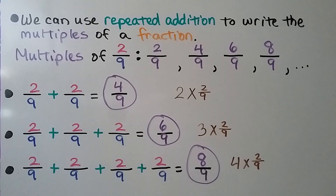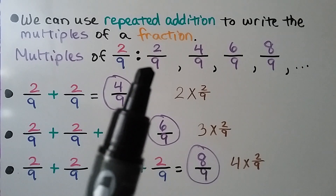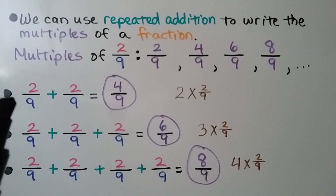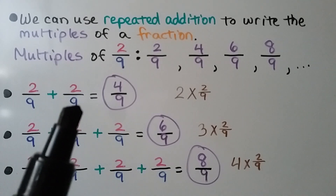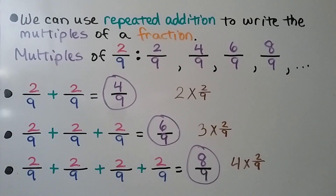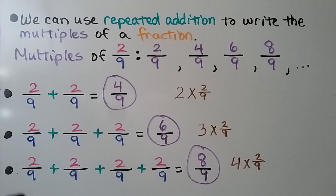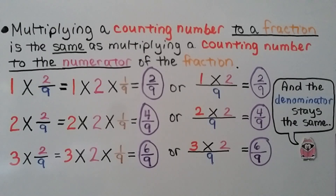We can use repeated addition to write the multiples of a fraction. To find the multiples of 2/9: 1 times 2/9 is just 2/9. For the next multiple, 2/9 plus 2/9 is 2 times 2/9, which is 4/9. Then 2/9 plus 2/9 plus 2/9 — that's 3 addends. Next, 4 addends of 2/9. Multiplying a counting number to a fraction is the same as multiplying that counting number to the numerator of the fraction.